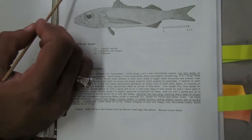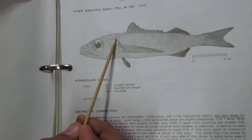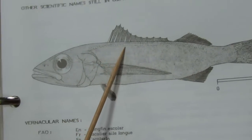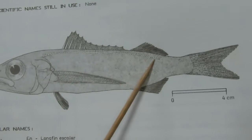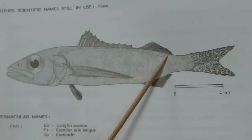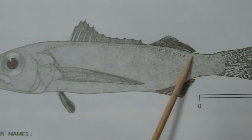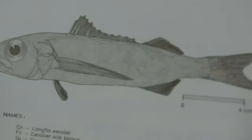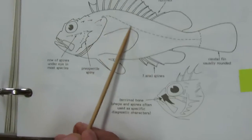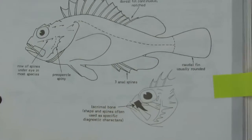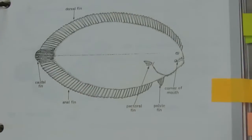Next family is Scombrolabracidae. In the case of Scombrolabracidae, the lateral line is represented only as a scale group.